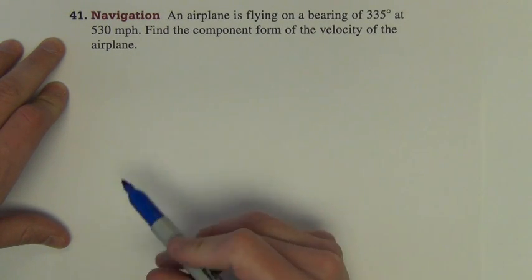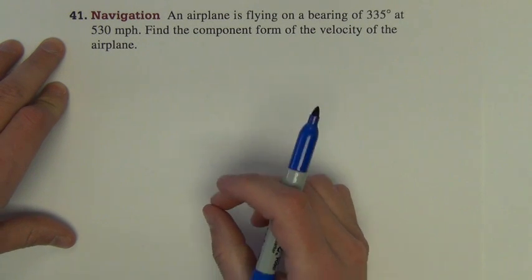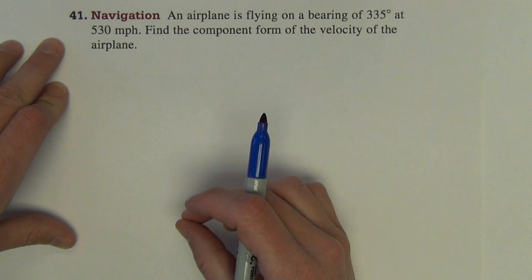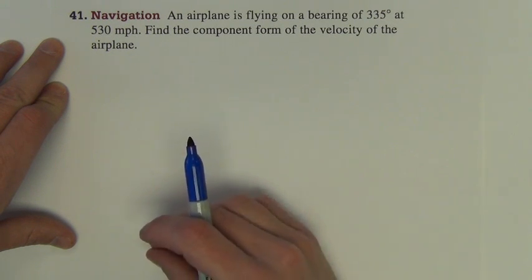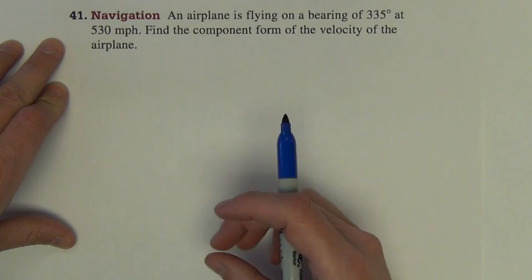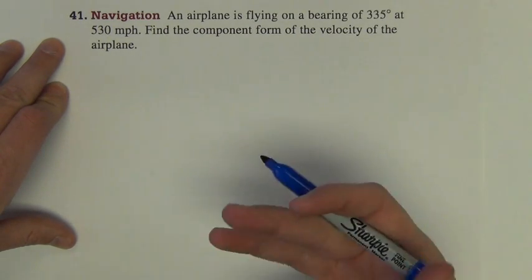Velocity of any moving object is a vector because velocity has both a magnitude and a direction. How fast is the object moving and in what direction is the object moving? That's velocity and that's a vector.